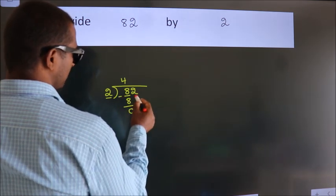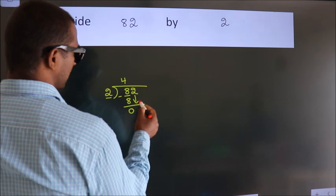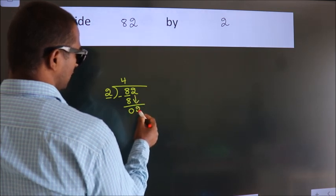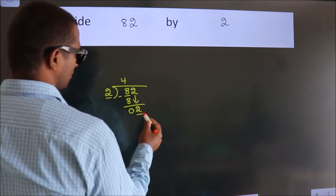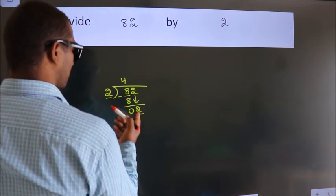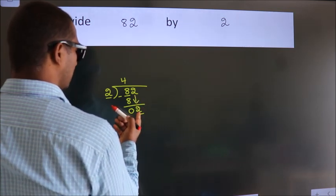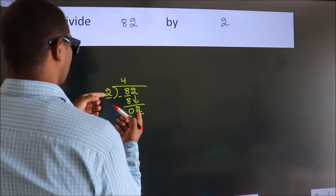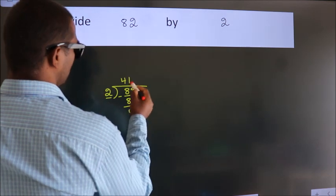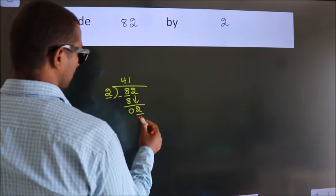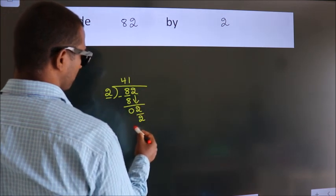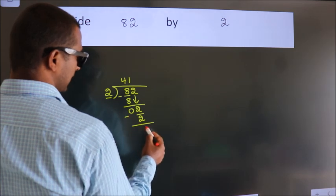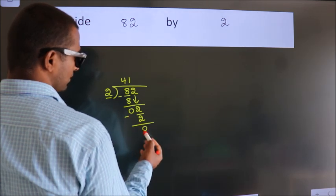After this, bring down the beside number — so 2 comes down. When do we get 2 in the 2 times table? 2 once is 2. Now we subtract. We get 0.